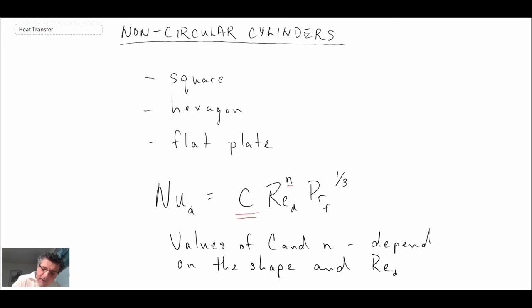So depending upon the book that you're using you'll find tables that will have non-circular cylinders and they'll have different values of C and N. Just be careful to make sure that you're pulling the values at the right Reynolds number. And then from that you get C, you get N, and embedded within the Nusselt number we have the convective heat transfer coefficient because remember HD over K.